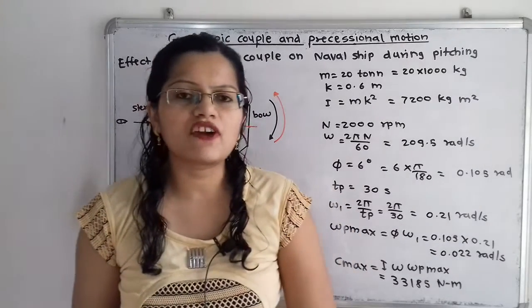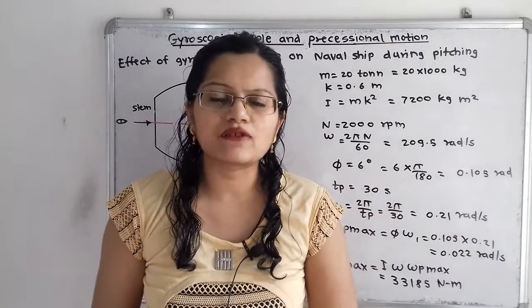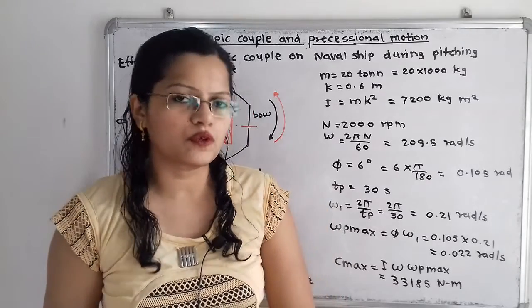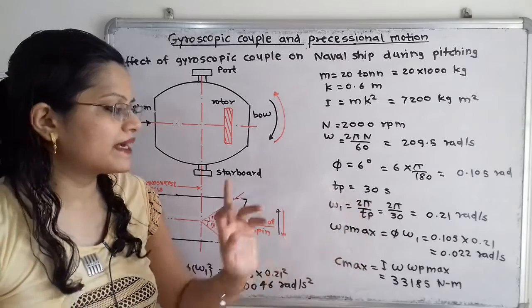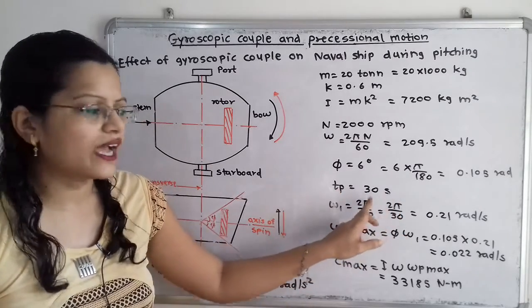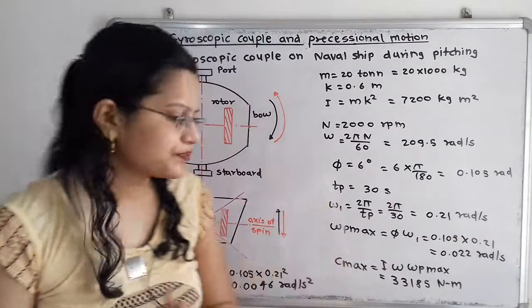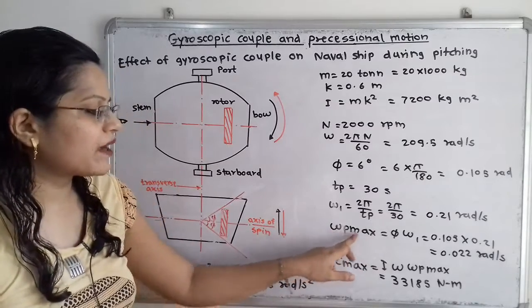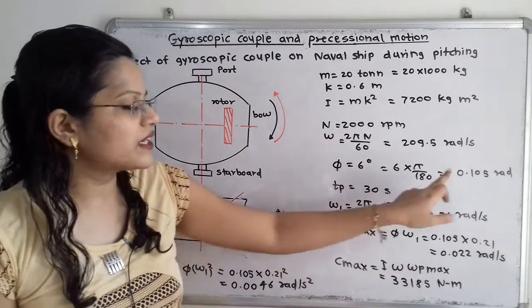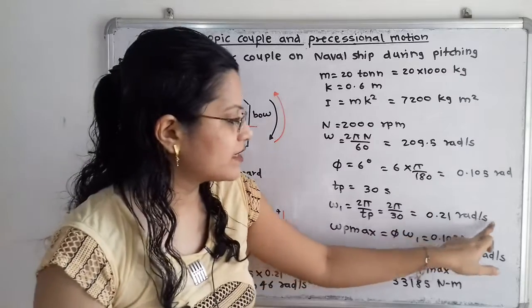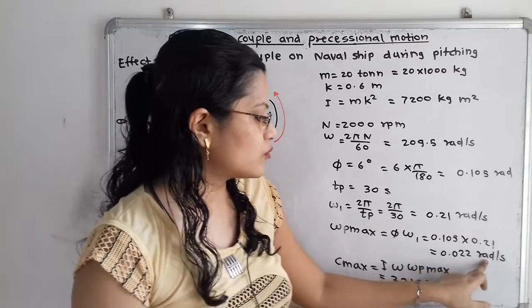The time period for one complete oscillation is 30 seconds. From this we calculate the angular velocity of simple harmonic motion: ω₁ = 2π/Tp = 2π/30 = 0.21 rad/s. Then the maximum angular velocity of precession is φ × ω₁ = 0.105 × 0.21 = 0.022 rad/s.